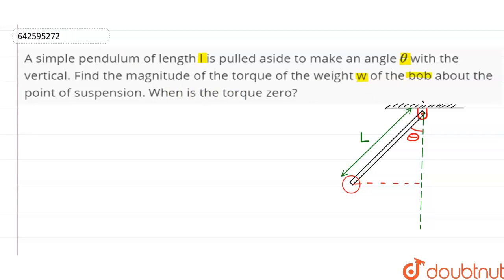So the point of suspension is here, let's denote it by O. And our bob has a weight W and it is acting in the downward direction W.